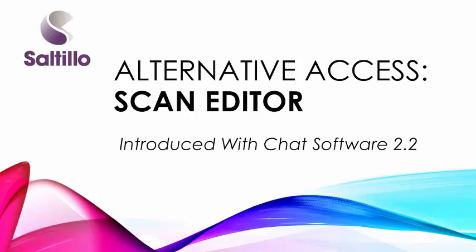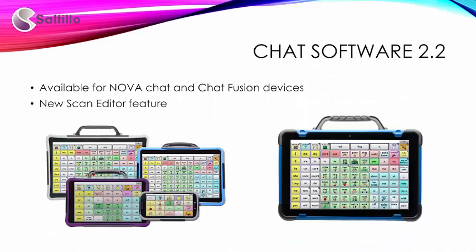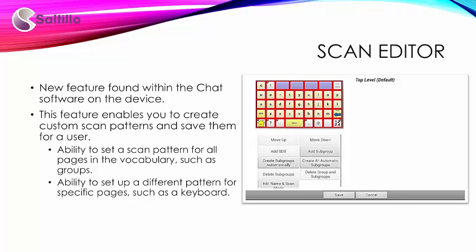This tutorial will explore a new feature, the scan editor, found with version 2.2 and higher of the chat software. The chat software is found on the Satilo NovaChat and ChatFusion devices. The scan editor is located within the chat software on the devices. There may be times when the standard scan pattern may not be optimal for the client. This scan editor feature enables you to create custom scan patterns and save them for a user.